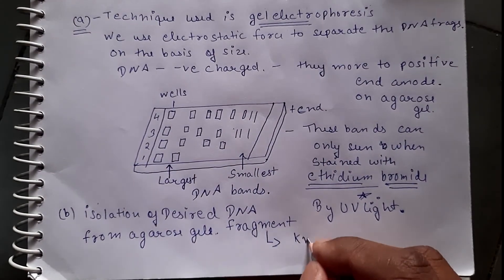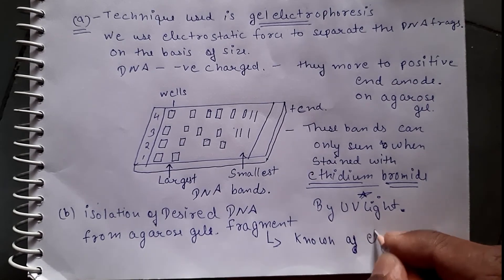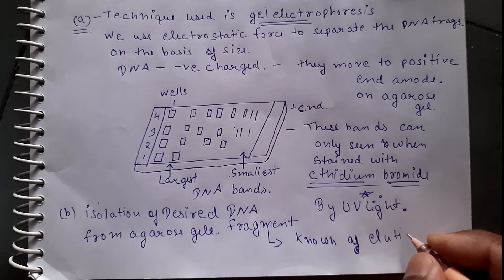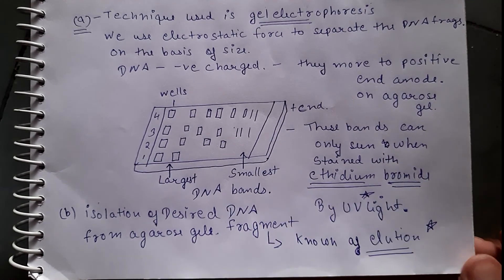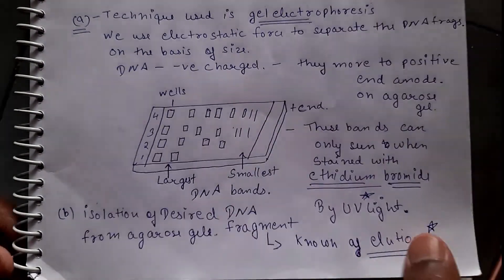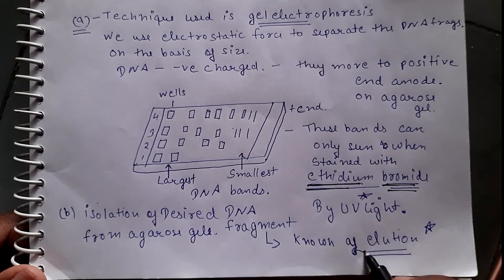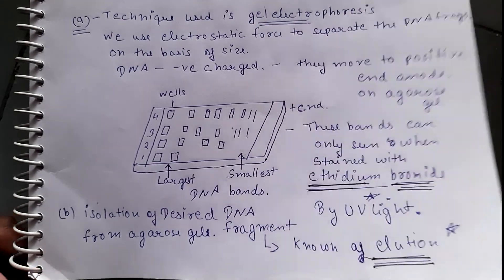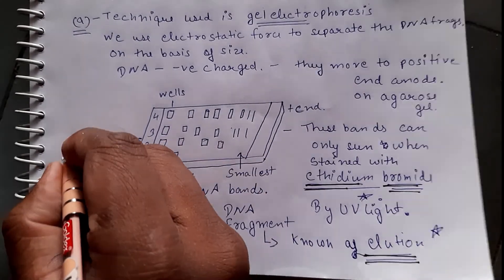To summarize: in gel electrophoresis, ethidium bromide, UV light, and elution are important points. In fragmentation, restriction enzymes are the important point, and in isolation of genetic material, the different types of enzymes are the important points. In the next video we are going to study the remaining five steps of recombinant DNA technology, so please stay tuned. Thanks for watching.